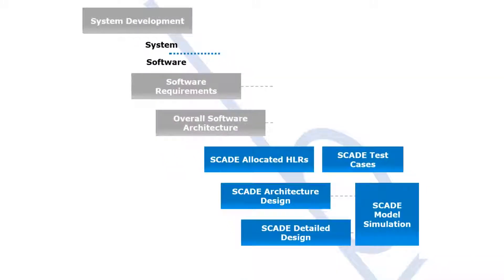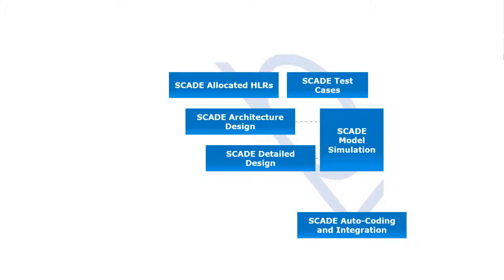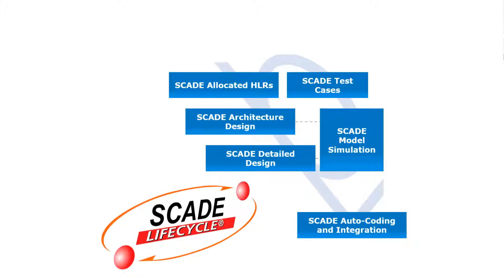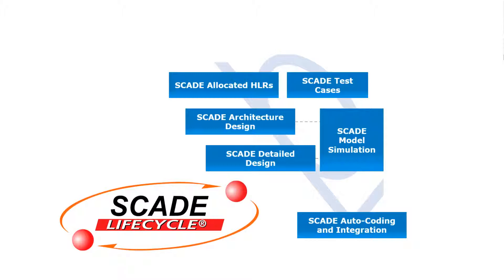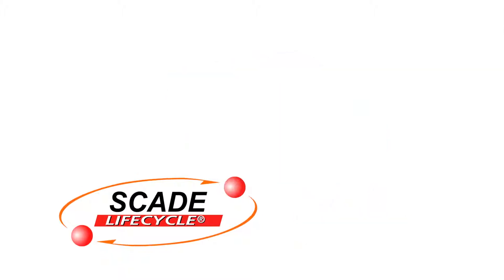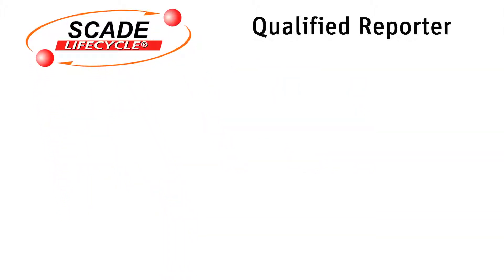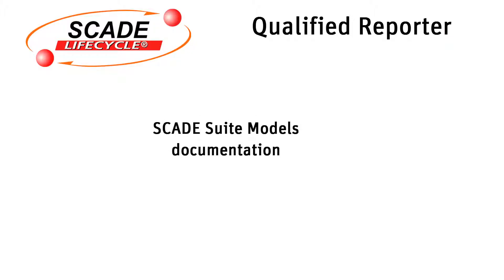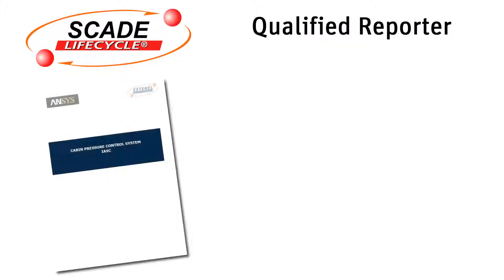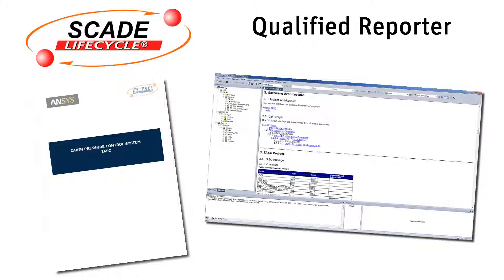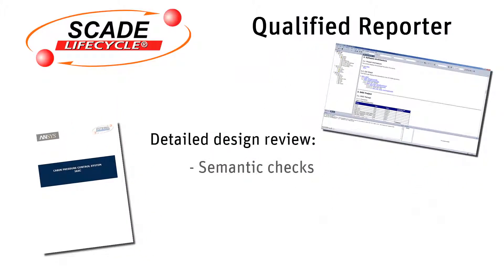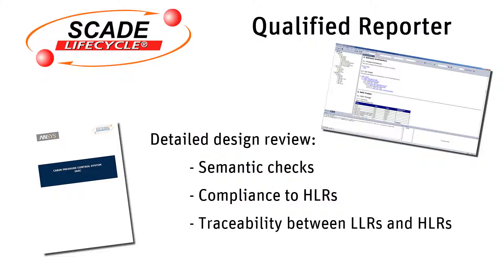The software detailed design phase is associated with documents that reference the activities and outcomes of the project. Document generation can be performed with the SCADE Lifecycle qualified Reporter, which can be used at this stage to generate the design review document. The SCADE Lifecycle Reporter automatically generates SCADE Suite model documentation for design reviews in RTF format for the qualified version, or HTML. The detailed design review includes semantic checks automated by SCADE Suite KCG semantic check, compliance to HLR verified by reviews and simulation, and traceability between LLRs and HLRs verified with the help of the RM Gateway.